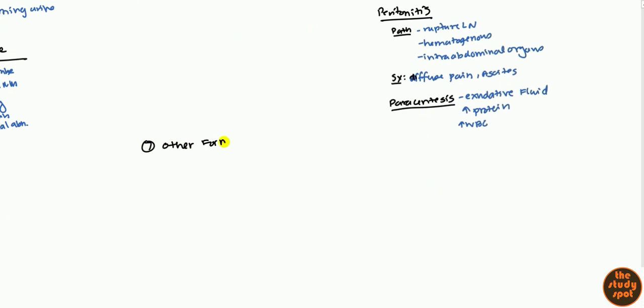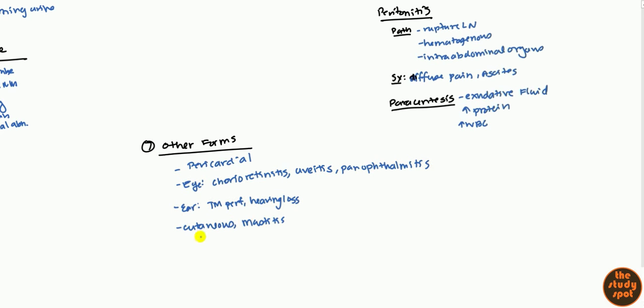Finally, we'll talk about some other forms where it can be found. This is in the pericardium. In the eye, you can have chorioretinitis, uveitis, and even panophthalmitis. In the ear, it can cause tympanic membrane perforation which can lead to hearing loss. You can get cutaneous symptoms as well as mastitis. It can affect the adrenal glands, above the kidneys, the adrenal medulla, causing adrenal insufficiency. And you can get congenital TB where it crosses transplacentally.